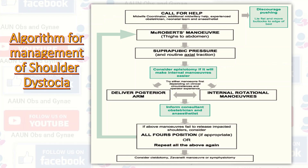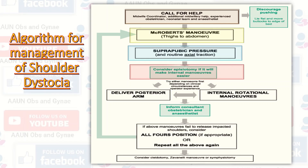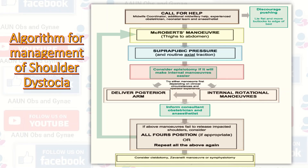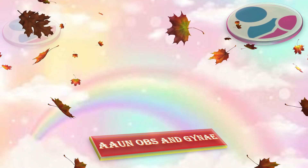This algorithm for shoulder dystocia follows the RCOG guideline, in which the management plan is: first, call for help; next, McRoberts maneuver; then suprapubic pressure and consider episiotomy; then deliver the posterior arm and perform internal maneuvers; inform the consultant; repeat all steps again; and finally resort to destructive procedures if rarely needed — including cleidotomy, Zavanelli maneuver, or symphysiotomy. That was all about the shoulder dystocia skills drill station. Thank you so much.